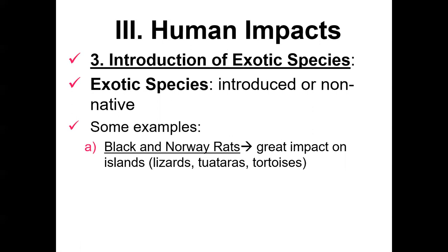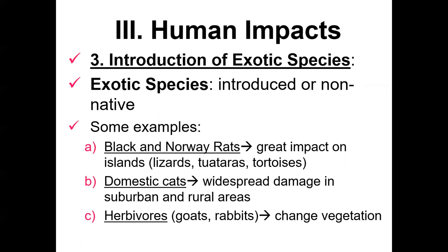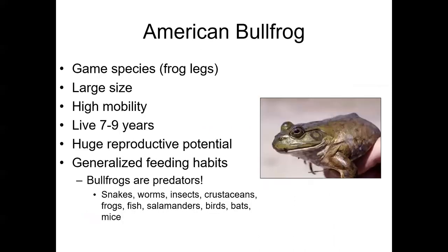Exotic species are undesirable because they oftentimes negatively impact native biota. Examples include black-and-Norway rats, domestic cats, and herbivores. The example I want to talk about is the American bullfrog. Bullfrogs are a game species, highly sought after for their large frog legs, and have been introduced in areas where they previously did not exist. Bullfrogs have a large size, are highly mobile, long-lived, have huge reproductive potential, and highly generalized feeding habits — if it can fit in their mouth, they'll eat it.